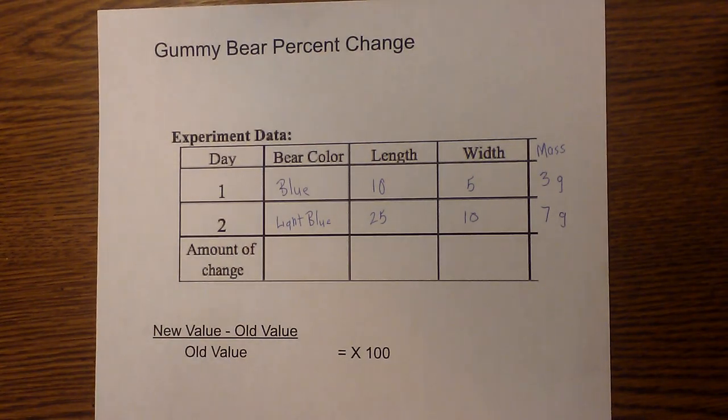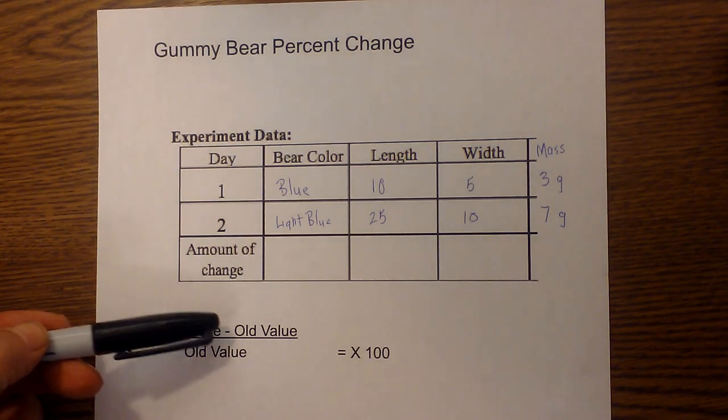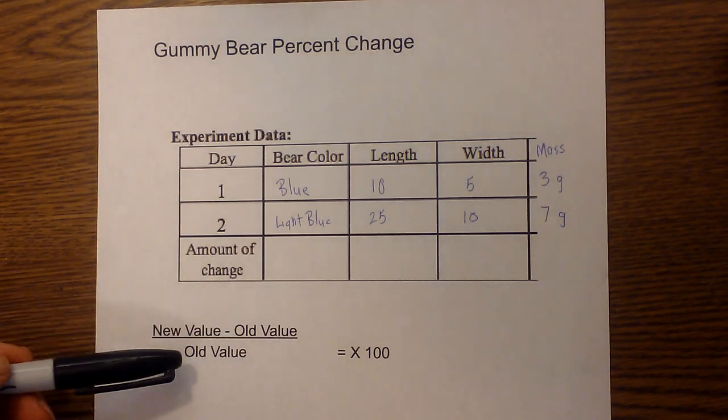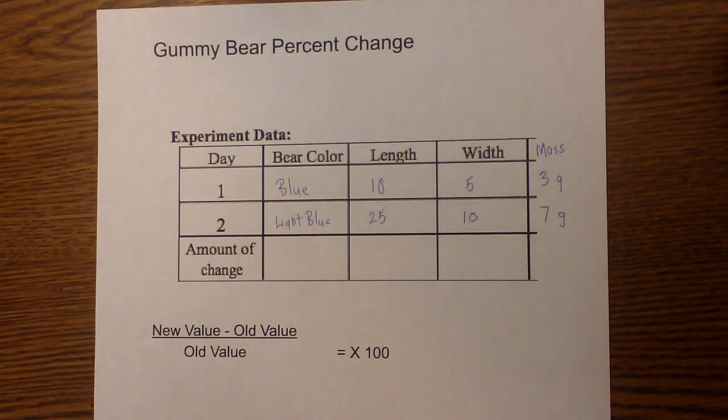Before we get started, here is the formula you need to use. You take the new value minus the old value over the old value times 100. So let's work a couple of these examples.